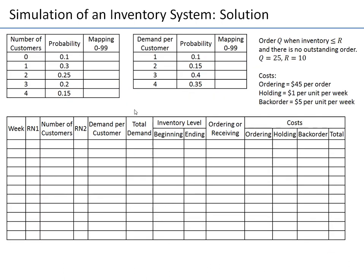To simulate, we first need to map random numbers to outcomes. For the number of customers, I've prepared a table: 10% probability (0 customers) maps to numbers 0–9; the next range maps to 10–39; 25% maps to 40–64; 20% maps to 65–84; and 15% maps to 85–99. This gives us our random number mapping for the number of customers arriving each day.